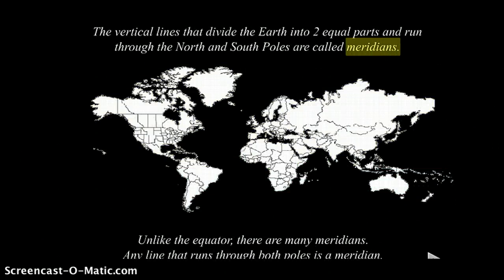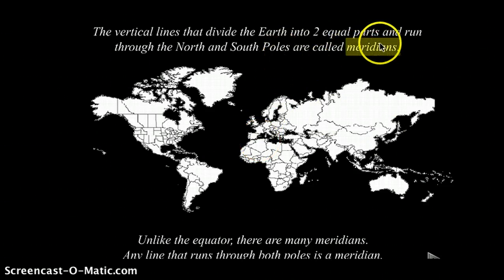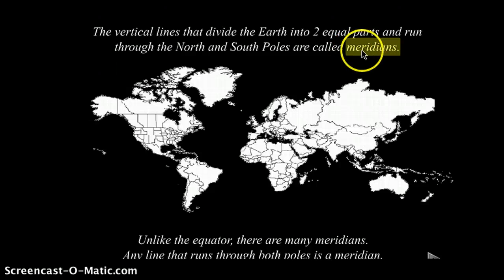The vertical lines that divide the earth into two equal parts and run north and south along the north and south poles are called meridians. Unlike the equator, there are many meridians. Any line that runs through both poles is called a meridian.